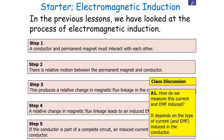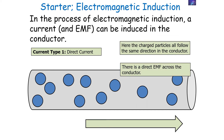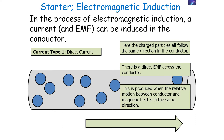But how do we measure this current and EMF induced? It depends on the type of current and EMF induced in the conductor, because there are two types of current that can be induced. The first type is direct current. In direct current, the charged particles all flow in the same direction in the conductor. To produce a direct current, there's a direct EMF across the conductor, and this is produced when the relative motion between the conductor and the magnetic field is in the same direction.